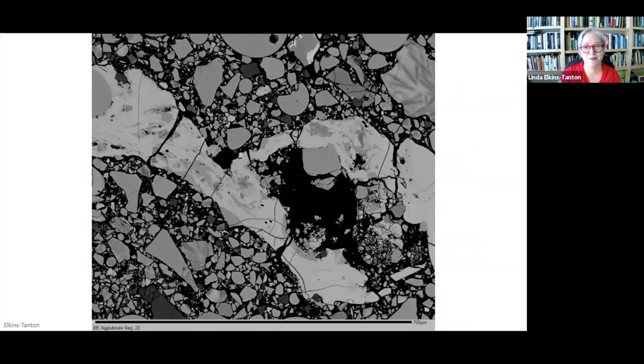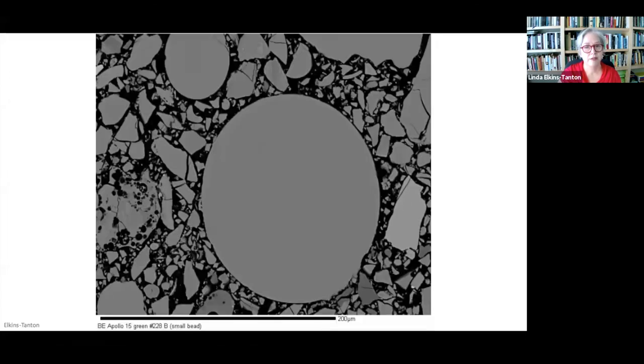This is a little gratuitous, but I couldn't resist showing a few photomicrographs I made of Apollo 15 soil samples using Tim Grove's electron microprobe at MIT when I was in grad school. This is a schlieren - material that was melted and mixed together by meteorite impacts. Look at the scale bar at the bottom - 700 microns, that's 70 percent of a millimeter, so very small.